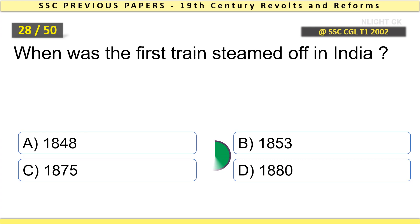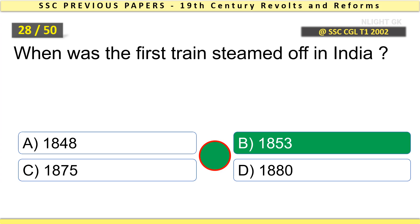When was the first train steamed off in India? In 1853.